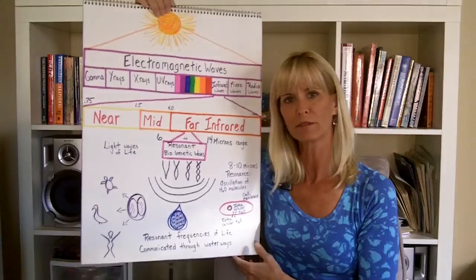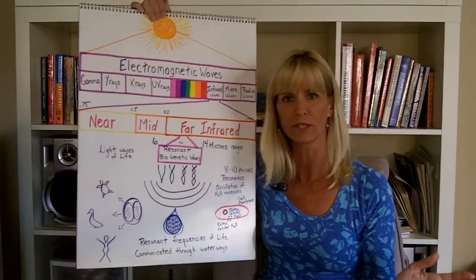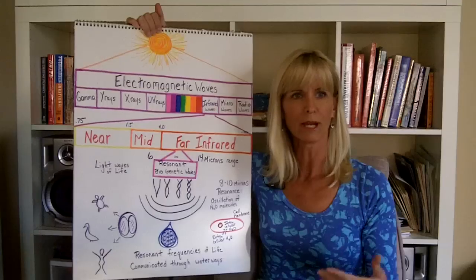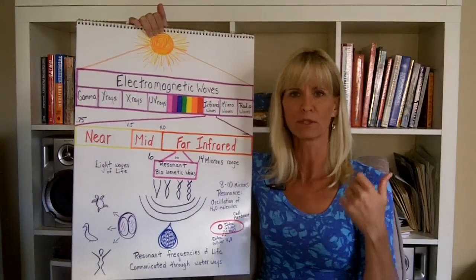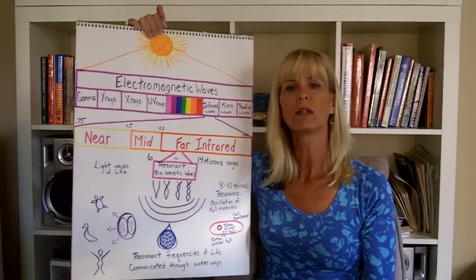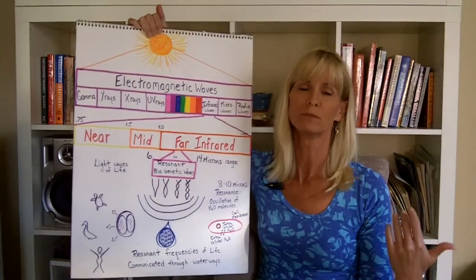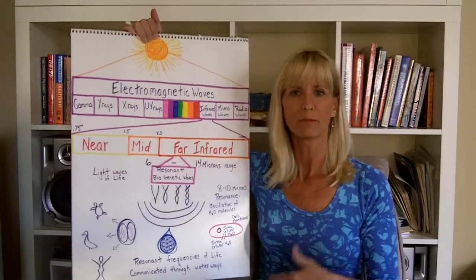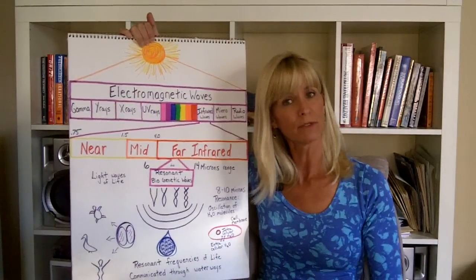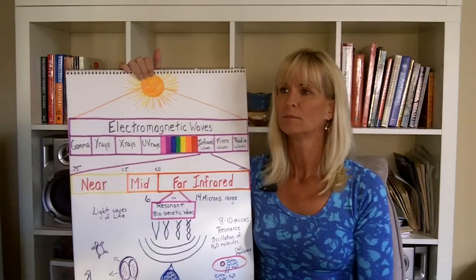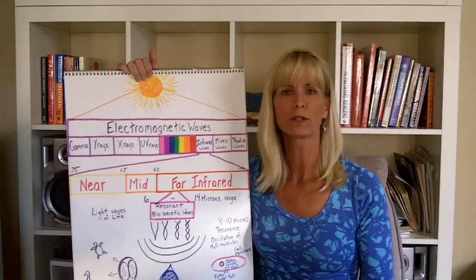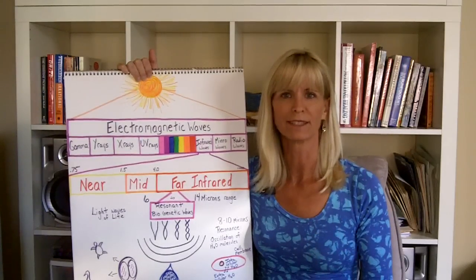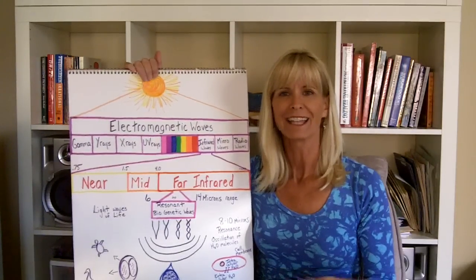So what we know about life on earth is that there are some integral aspects to our life. We are made up of many things but water and protein, and we're about 70% water. We also know that water is always moving, it oscillates.